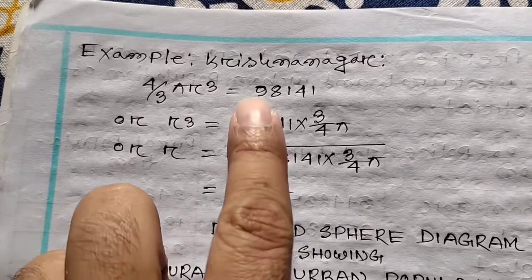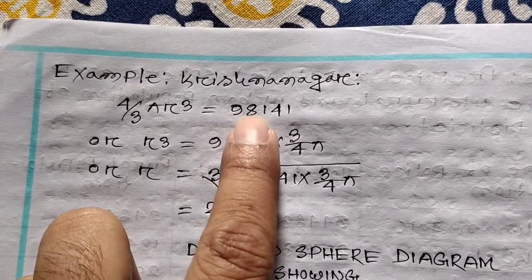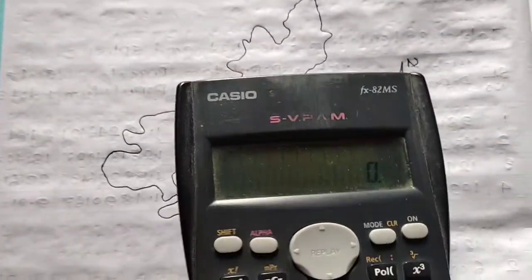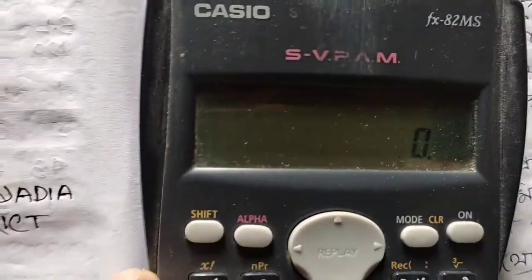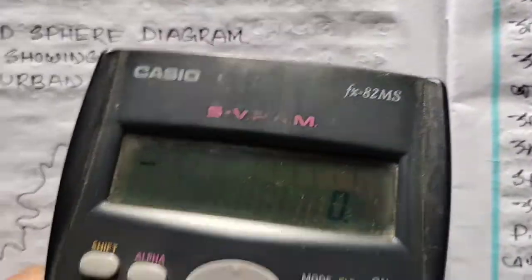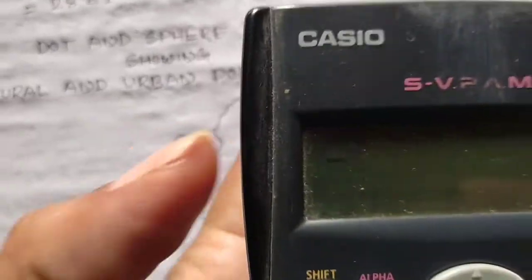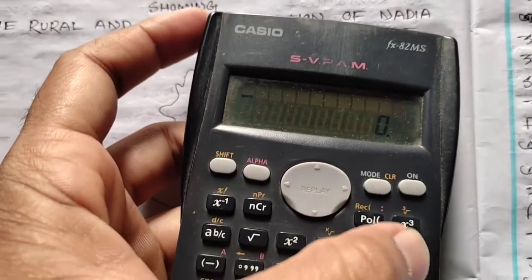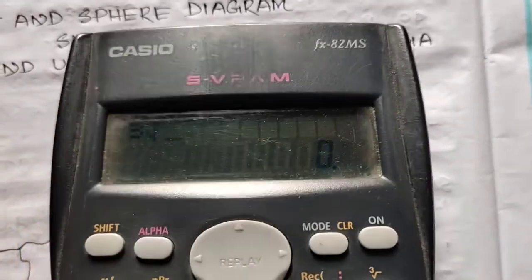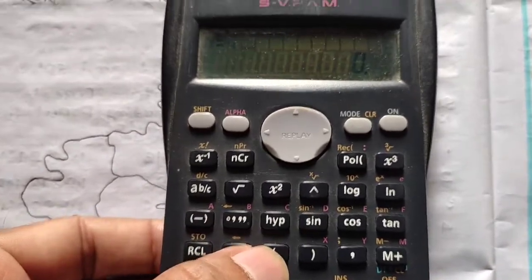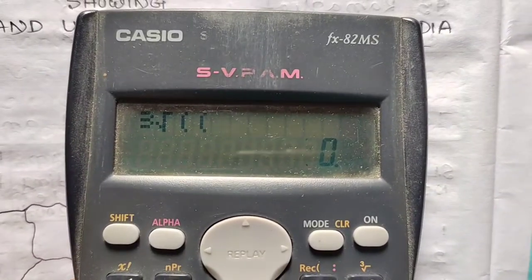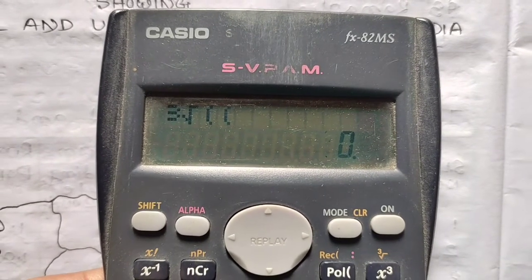This is the R1 population. To calculate R1, we are looking at the cube root. For Kishnagar, the urban population is the value we use. Look — Kishnagar is the urban population.